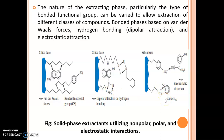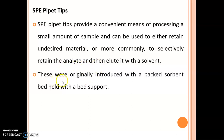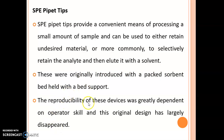Solid phase extraction utilizes non-polar, polar, and electrostatic interactions. The second instrument used for this method is SPE pipette tips. SPE pipette tips provide a convenient means of processing a small amount of sample and can be used to either retain undesired material or, more commonly, to selectively retain the analyte and then elute it with solvent. These were originally introduced with a packed sorbent bed held with a bed support; however, the reproducibility of these devices was greatly dependent on operator skill, and this original design has largely disappeared.